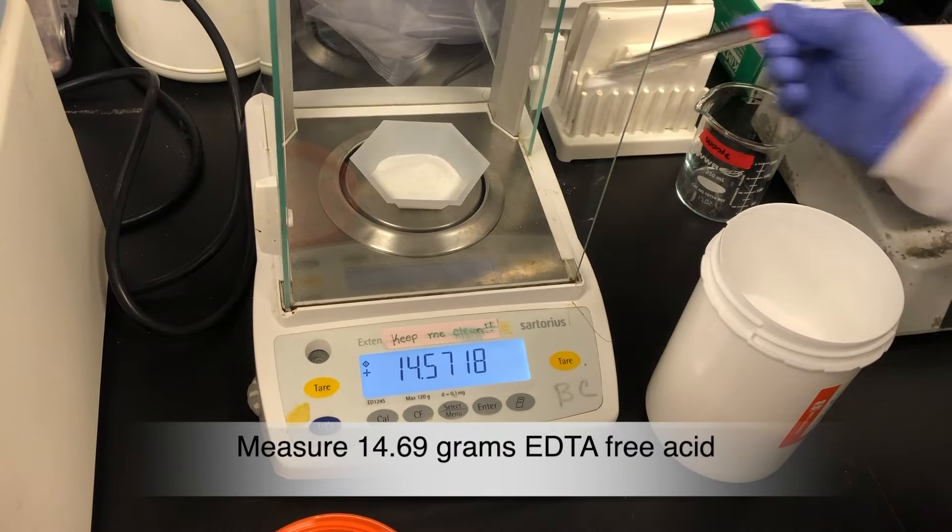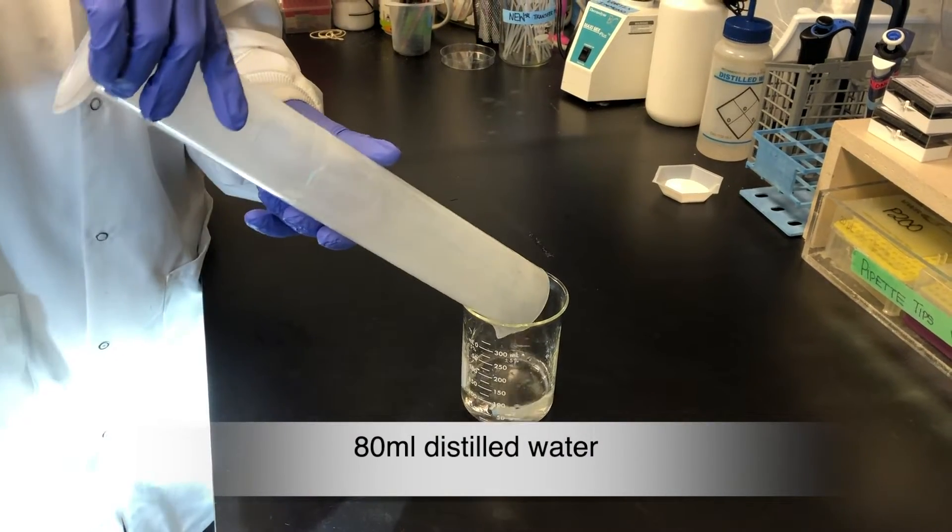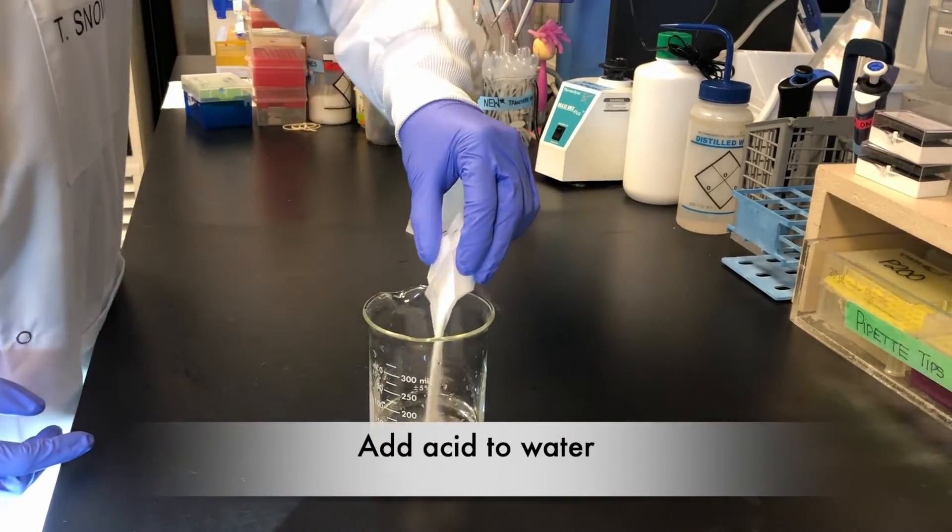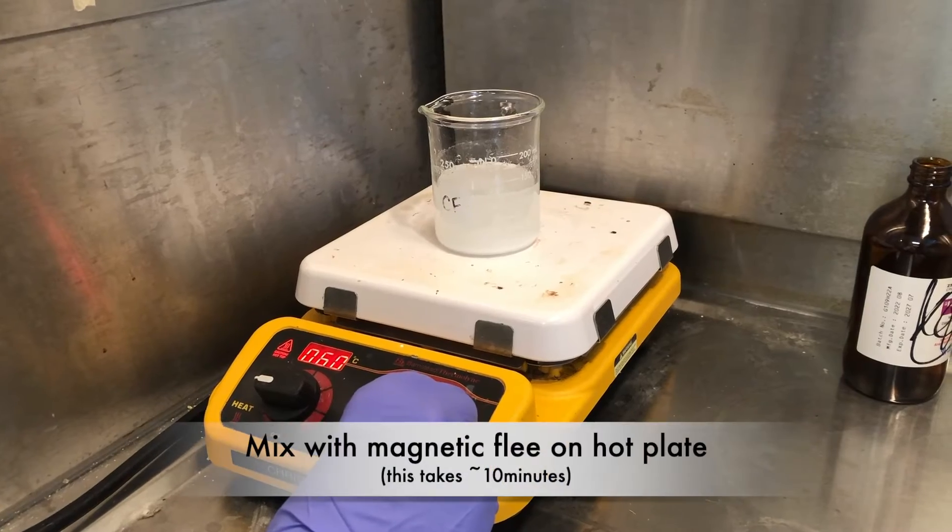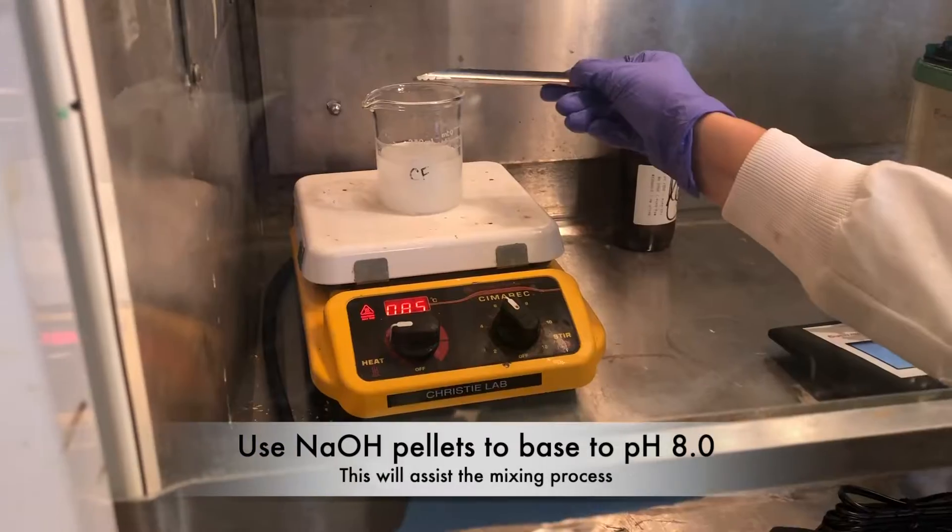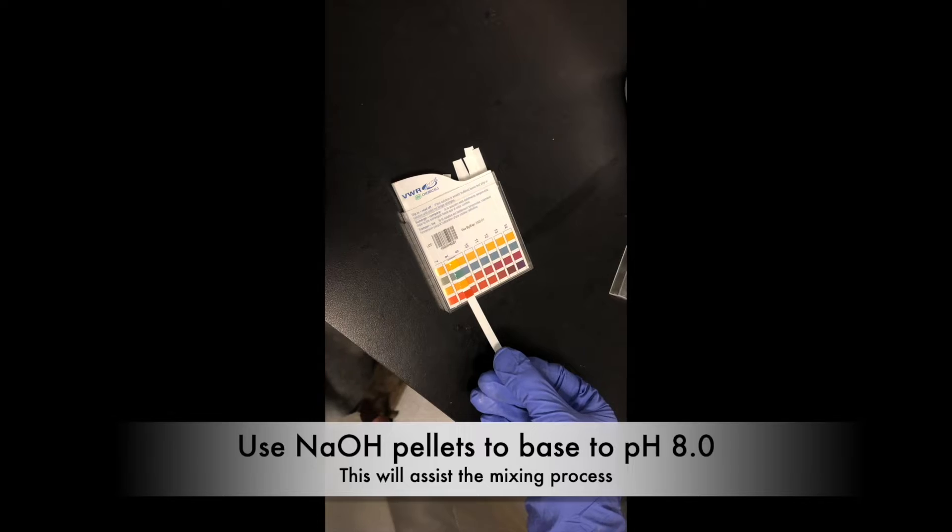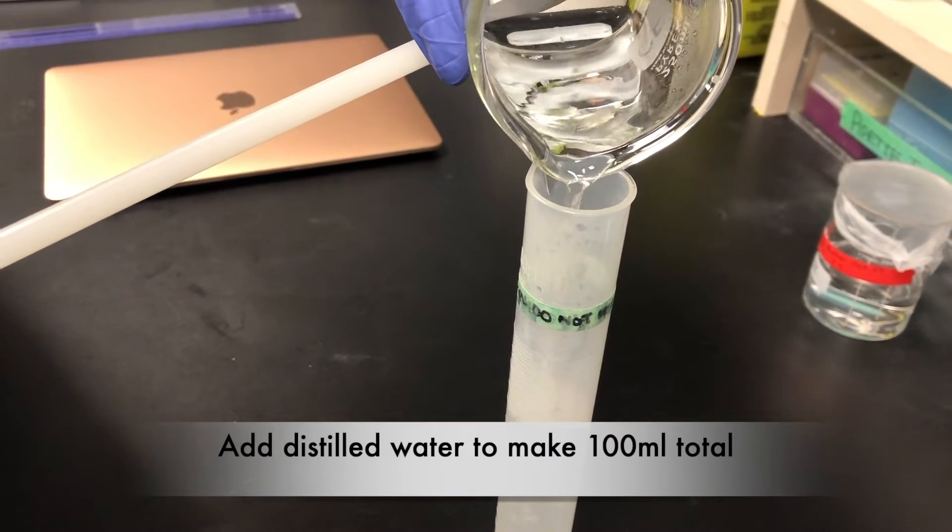Add 14.69 grams EDTA free acid and 80 ml distilled water. Always add acid to water. Mix on a hot plate till completely clear with a magnetic flea. Use NaOH pellets to base to 8.0. Top with distilled water to make 100 ml total.